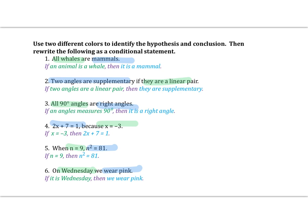Check your answers. On number four, the hypothesis is that x equals negative three, so we start with that: if x equals negative three, then two x plus seven equals one. For number five: if n equals nine, then n squared equals 81. And on number six: if it is Wednesday, then we wear pink.